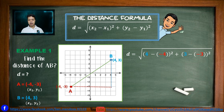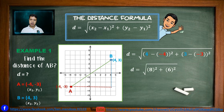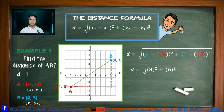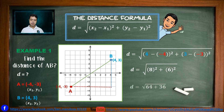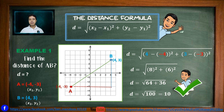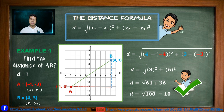4 minus negative 4 gives us positive 8, so that becomes 8 squared, while 3 minus negative 3 gives us 6 squared. 8 squared is 64, while 6 squared is 36. Getting the sum of 64 and 36, we have the square root of 100, and the square root of 100 is equal to 10. So the length of the segment connecting point A to point B is exactly 10 units.